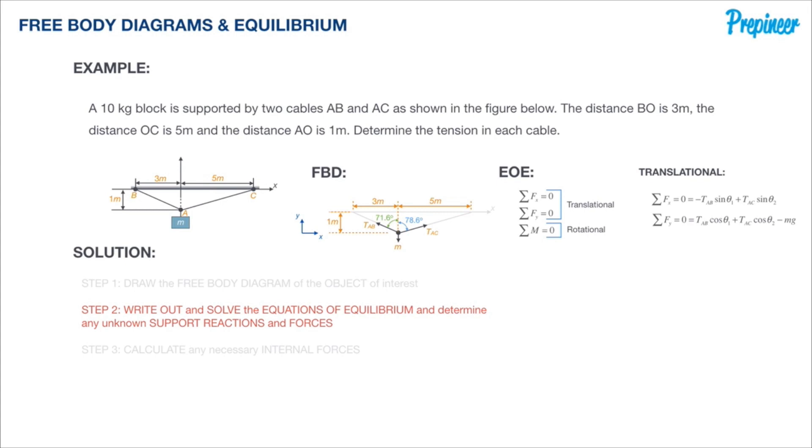I gather them up and I get an equation: T_AB cosine theta 1 plus T_AC cosine theta 2 minus mg. Again, there's that g—we're given mass, so we always got to remember gravitation.